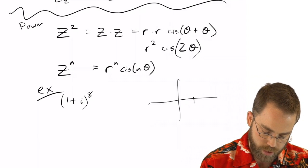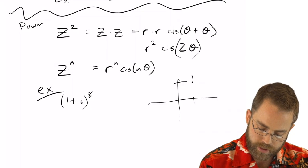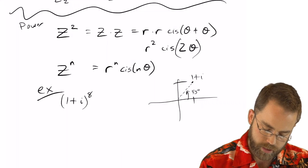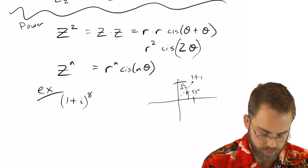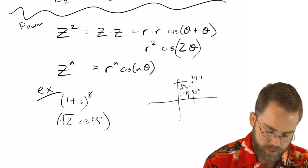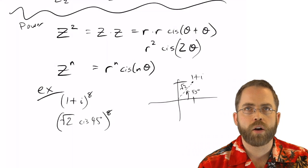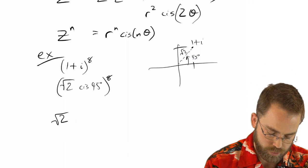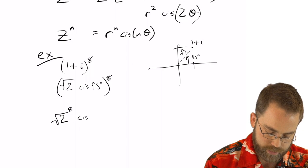But in cis format, where is 1 in the 1s and 1 in the i's? That's where it is right there. The angle is 45 degrees and the hypotenuse is root 2. So that's the same as saying root 2 cis 45 to the 8th. And now I've got to just take root 2 to the 8th and cis of 8 times 45.